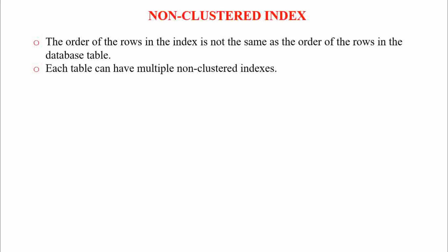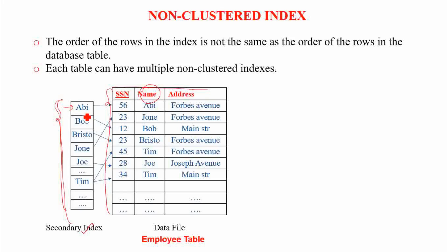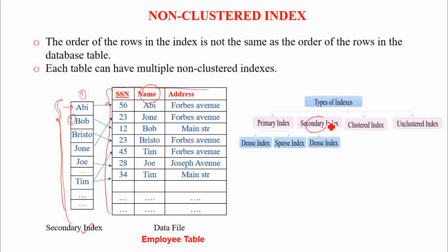In a non-clustered index, the order of rows in the index and the order of rows in the table are not similar. Here the index file is a secondary index, created on the name column which is a non-primary key column. The order of entries in this secondary index differs from the order of records in the table — for example, Bob is the second entry in the index but the second record in the table is John. That is why it is known as a non-clustered index. Whenever an index is made on non-primary key columns, it can only be an unclustered index.